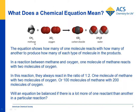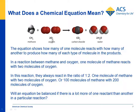Working with the equations also gives a chance to talk about what chemical equations really mean. They show the ratio of molecules that react to form a ratio of products. For instance, in the reaction between methane and oxygen, there will always be two molecules of oxygen for every molecule of methane, and they'll always produce two molecules of water to one molecule of carbon dioxide. The chemical equation shows which atoms are involved in the molecules and also the ratios in which they react.